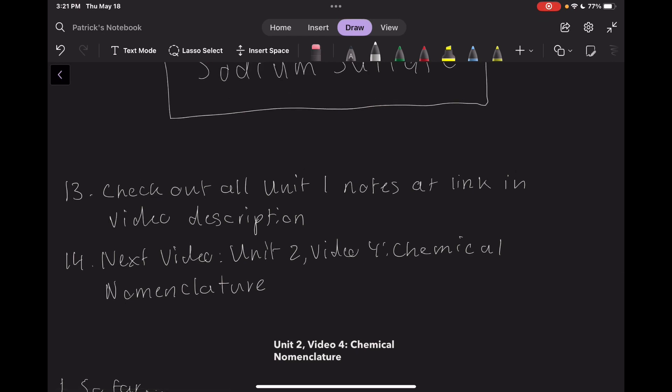Before we end for today, I'd like to remind everyone that my complete notes for Unit 1 are currently available at my personal website, the link to which you can find in the description below. Once you get there, navigate on over to the Resources tab at the top of the screen, scroll down a bit, and it should be there, ready to download. In the next video, Unit 2, Video 4, we will discuss chemical nomenclature. Thank you for watching.